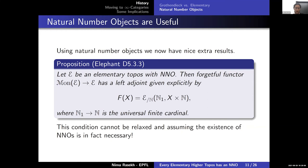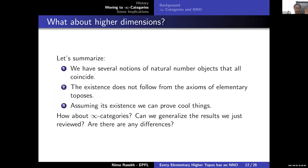To summarize the 1-categorical part: we define an elementary topos; to construct free monoids or similar results we consider several notions of natural number object that all coincide; assuming such an object exists we can prove results like free monoids exist, but without it we cannot — it is independent of the axioms of the elementary topos.